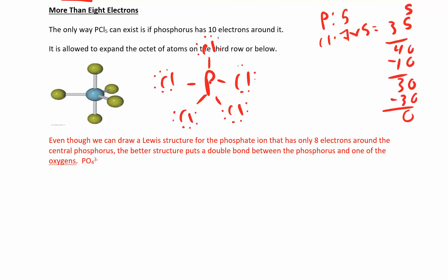And if you look at that, phosphorus has 2, 4, 6, 8, 10. That's the only way to do it. He has to expand its octet in order to form this compound.